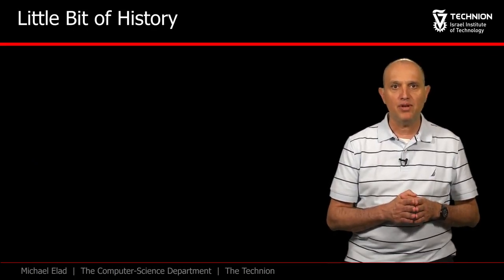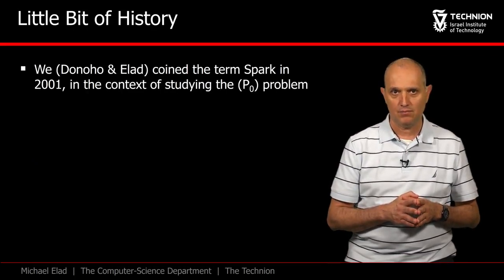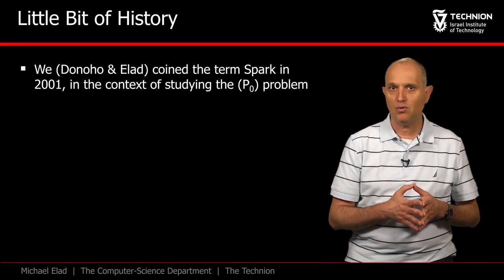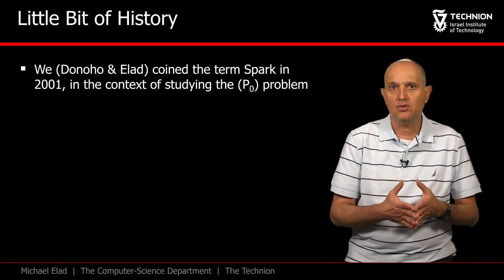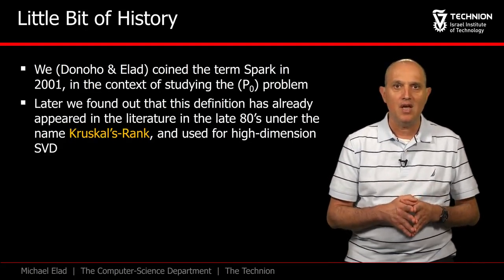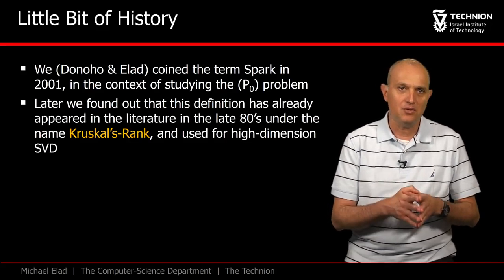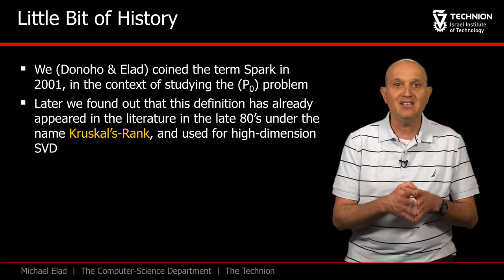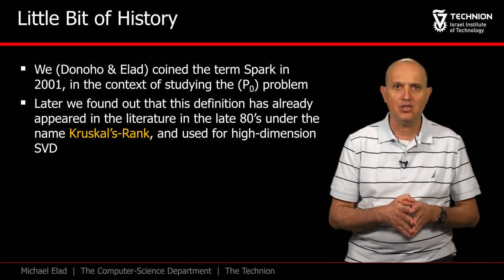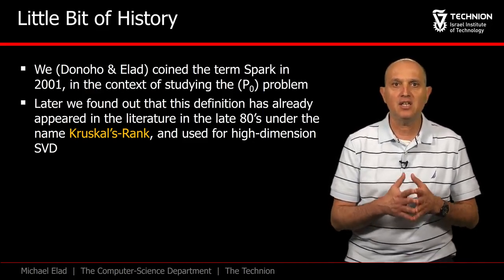We conclude this part with a brief historical note about the spark. We came up with this property in 2001 in our quest to analyze the P0 problem. A year later, we found out that this property of matrices has been already defined and used. In a work from the late 80s, Kruskal, a well-known statistician, used it for analyzing tensor decomposition.